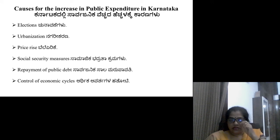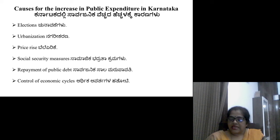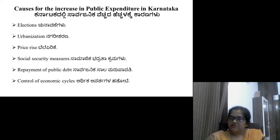Then, the next is repayment of public debt. The income that the government is getting is less, whereas the expenditure that the government is making is too high. So there is a large gap between public revenue and public expenditure. This gap between expenditure and revenue has to be filled in by public debt. The interest payment and the repayment of the debt in regular intervals also increases public expenditure to a large extent.